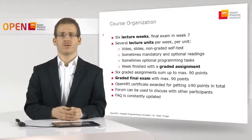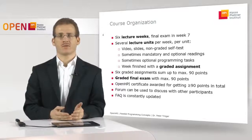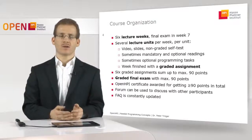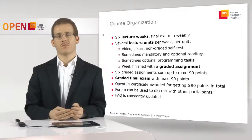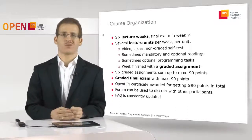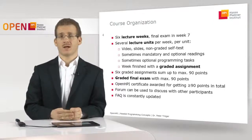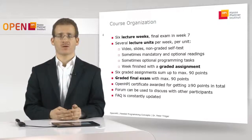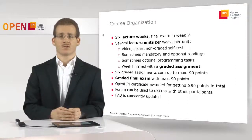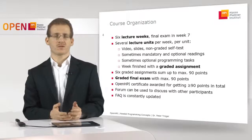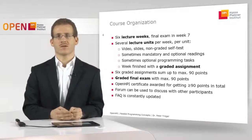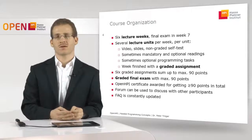With six weeks of lecturing we will have six graded assignment results, and in all these assignments you can get a maximum of 90 points. In the seventh week we have the final exam, where you can also get a maximum of 90 points. OpenHPI will award you a certificate if you have in sum at least 90 points. OpenHPI also has a forum where you can discuss with other participants and the teaching team about the content, ideas, and self-tests. We will monitor these forums and maintain a frequently asked questions section with prominent questions and answers.